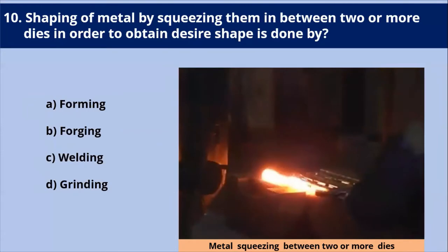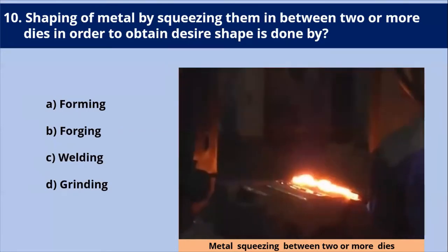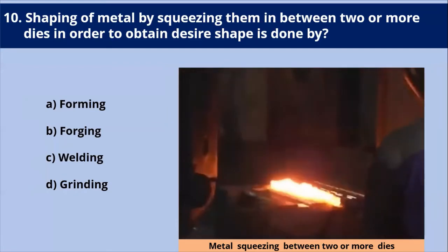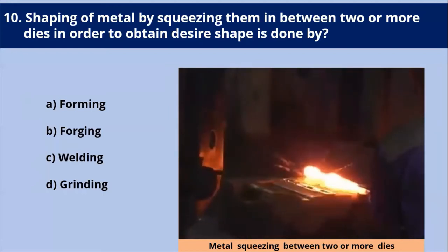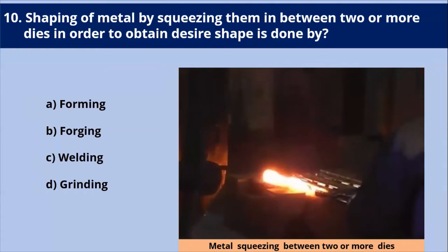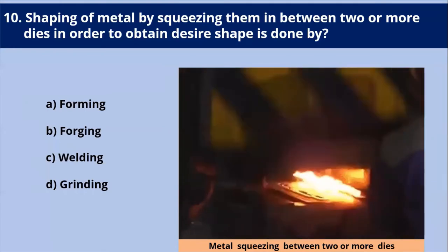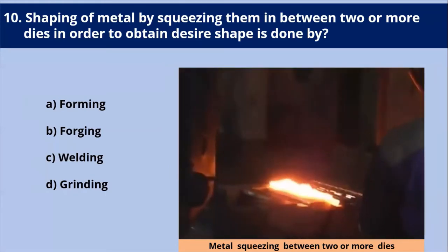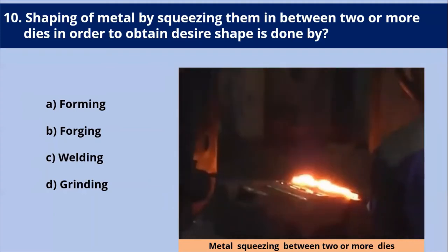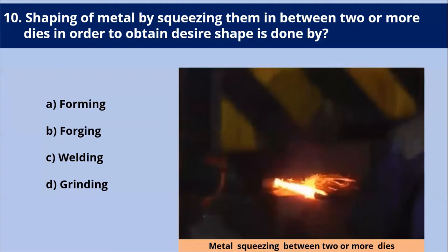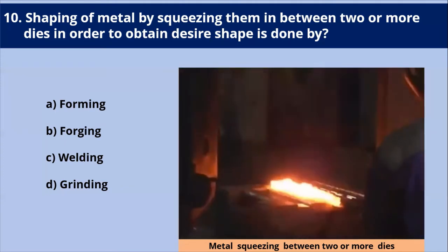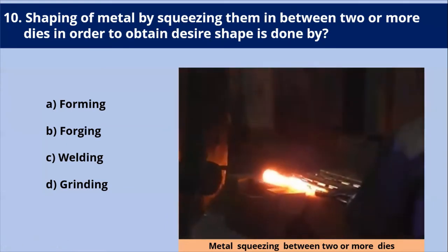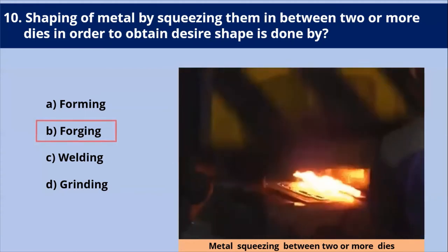Shaping of metal by squeezing it between two or more dies in order to obtain the desired shape is done by? Forging is a term applied to a family of processes where deformation is induced by a compressive force. The forging material may be drawn out to increase the length and decrease the cross section. In closed die forging, we can produce the component in a multidirectional flow using two or more dies. That's why our answer is forging.